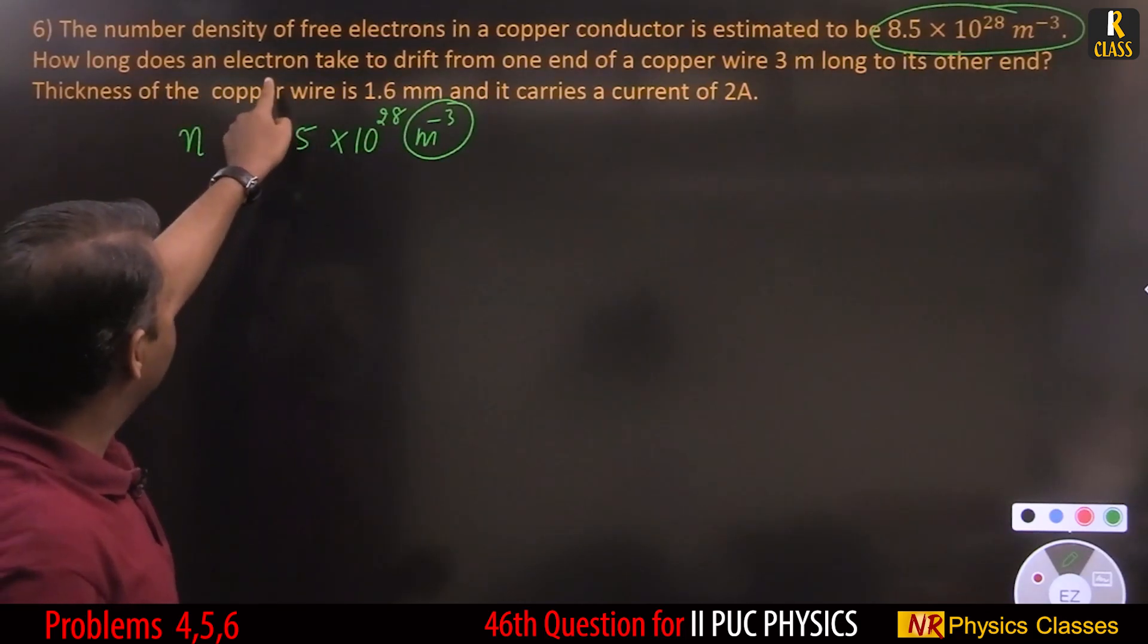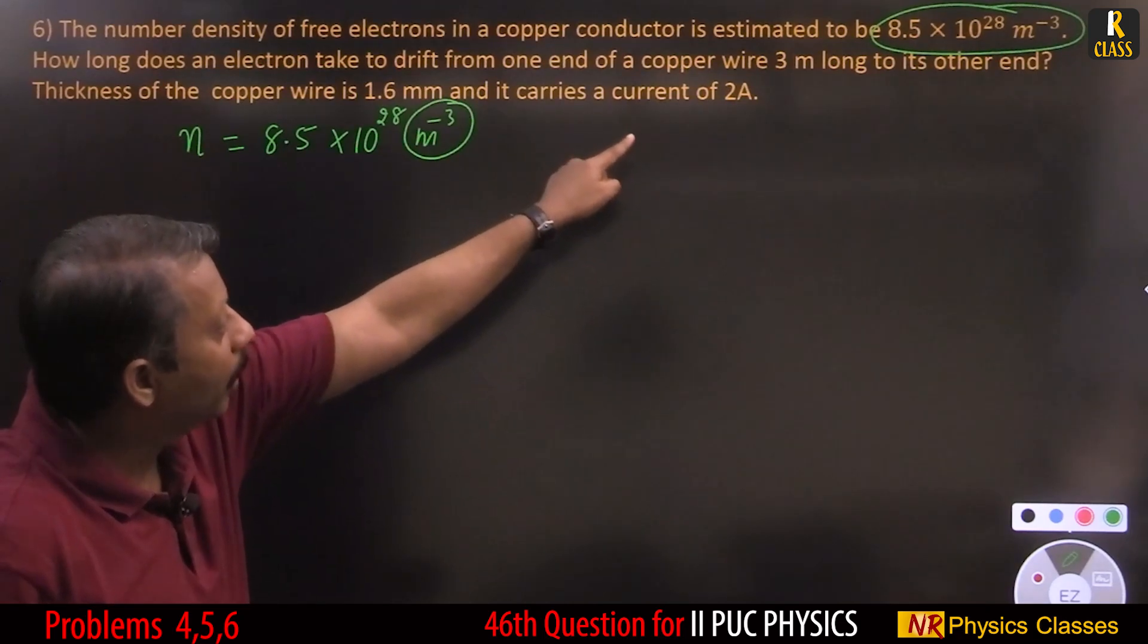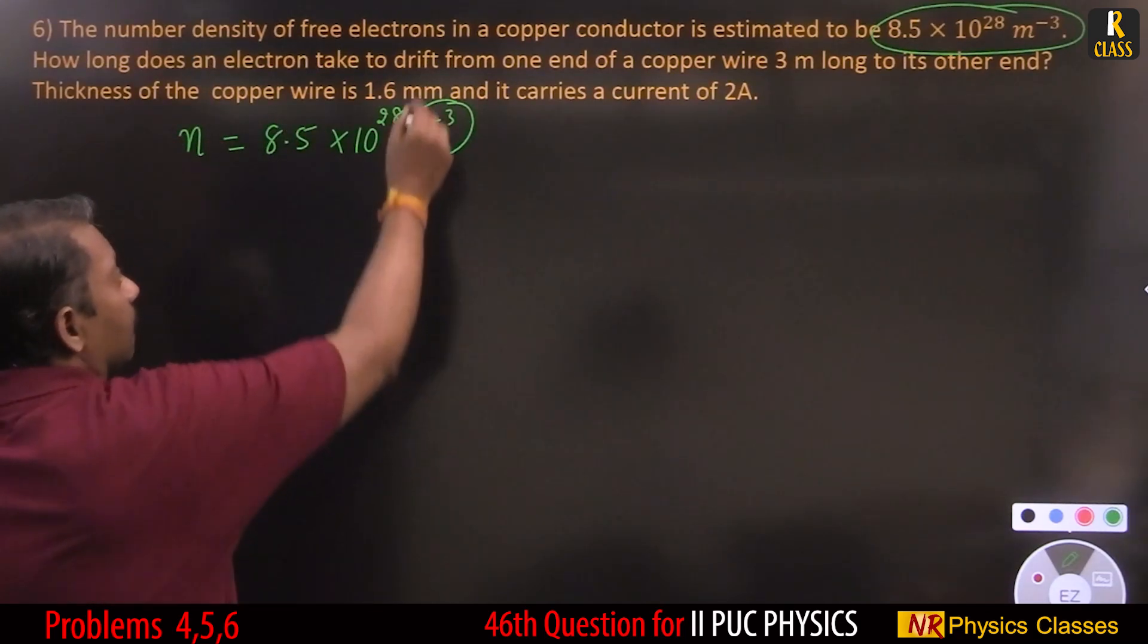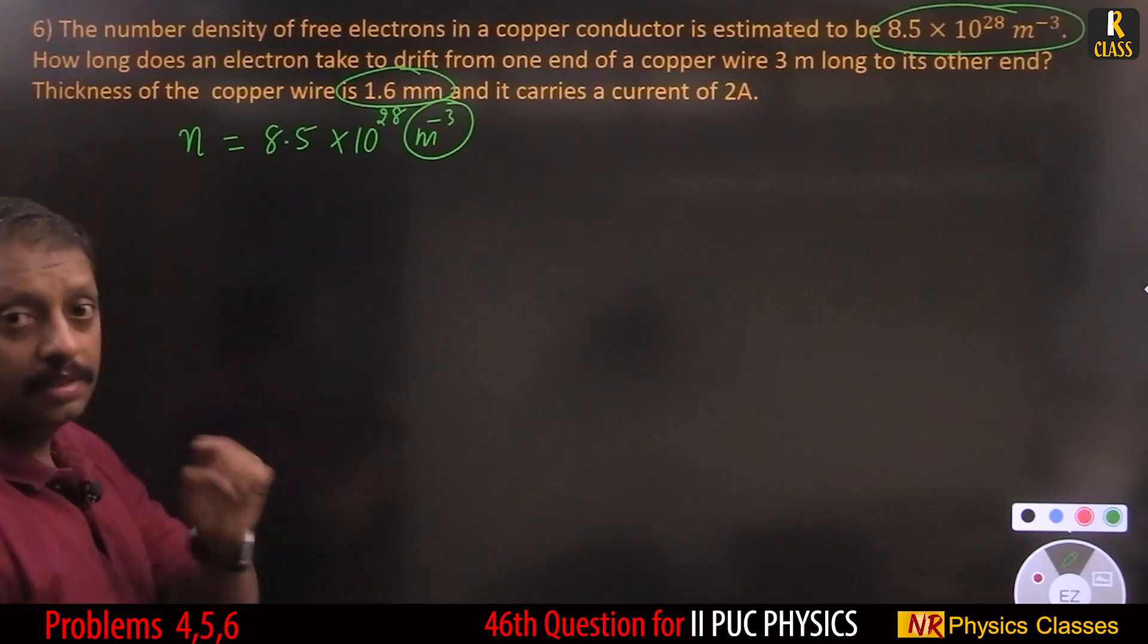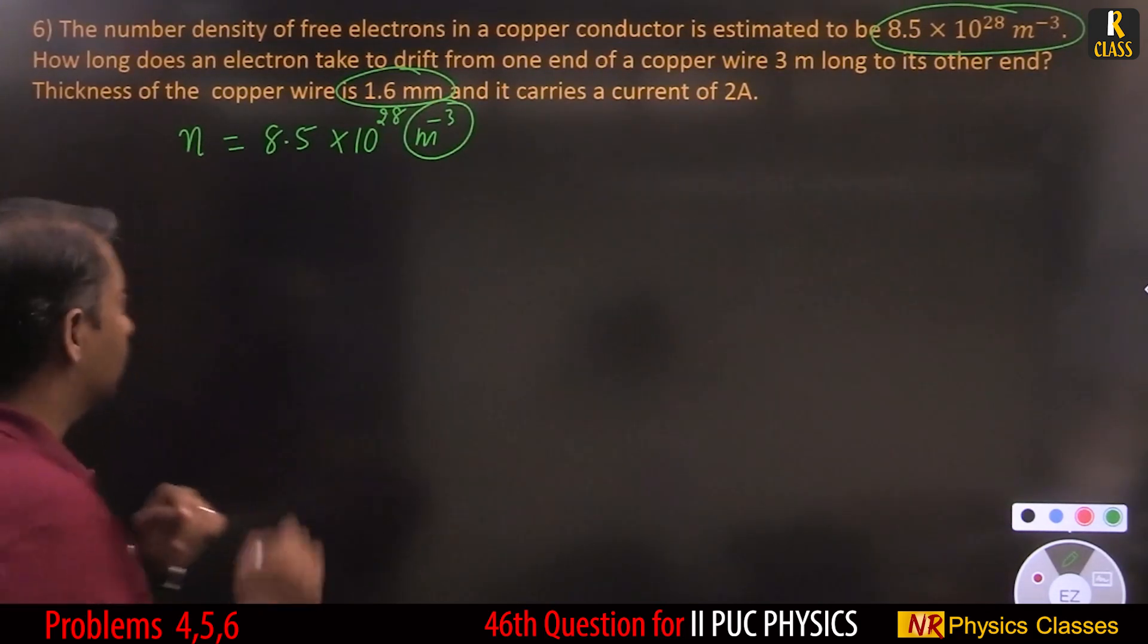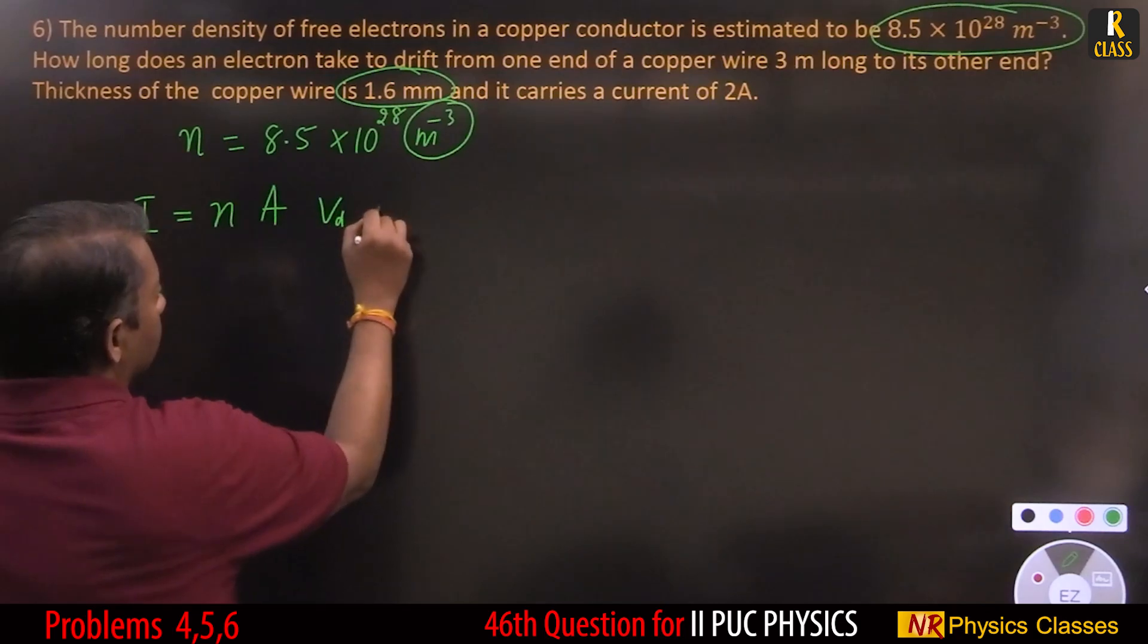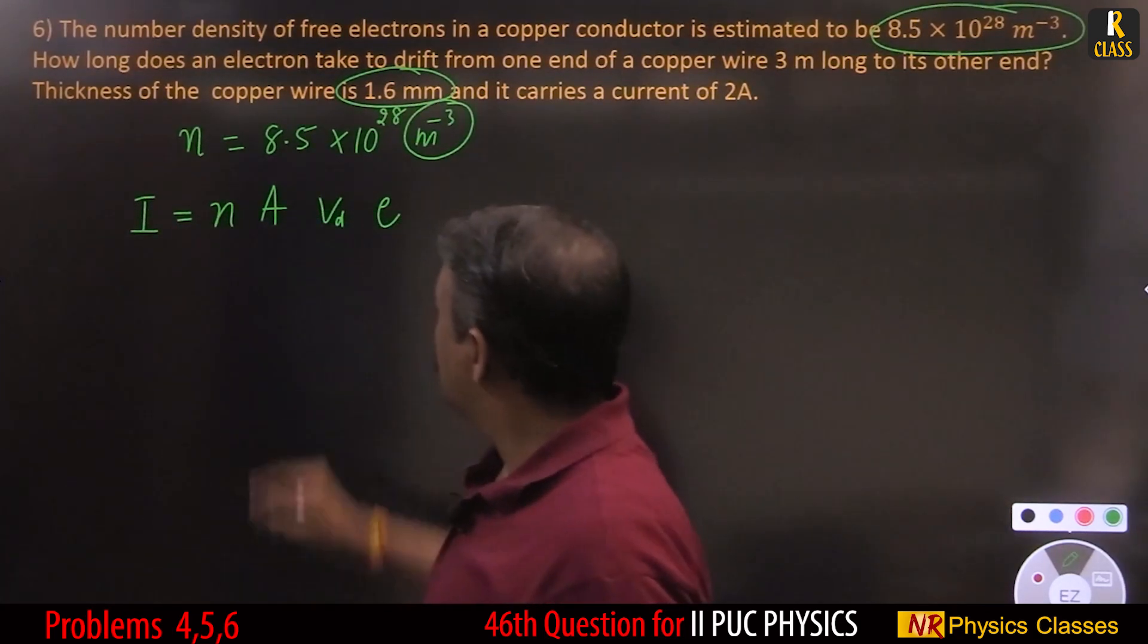How long does an electron take to drift from one end of a copper wire 3 meter long with given thickness. N is there in this equation I equals nAVde, so let us write the equation: I equals nAVde.